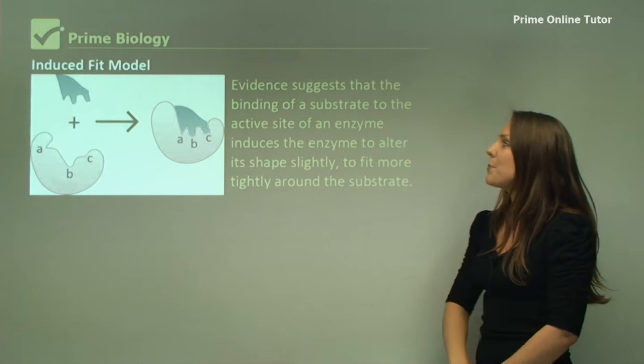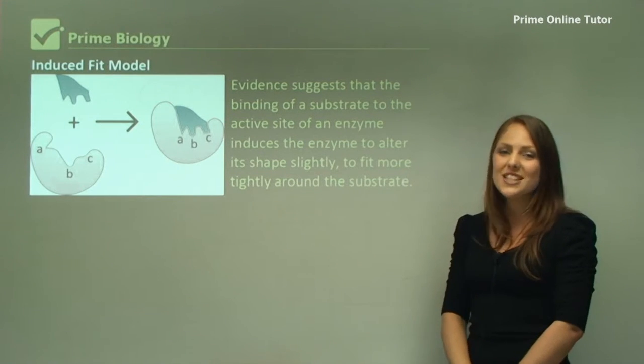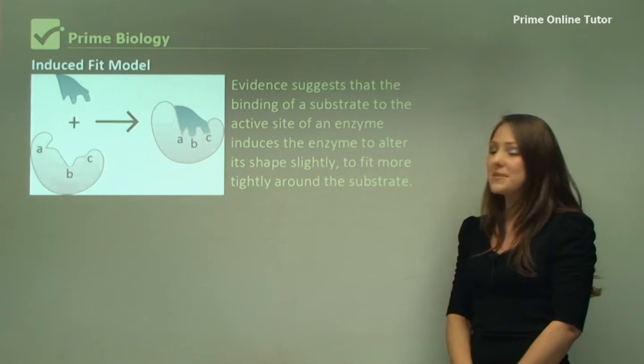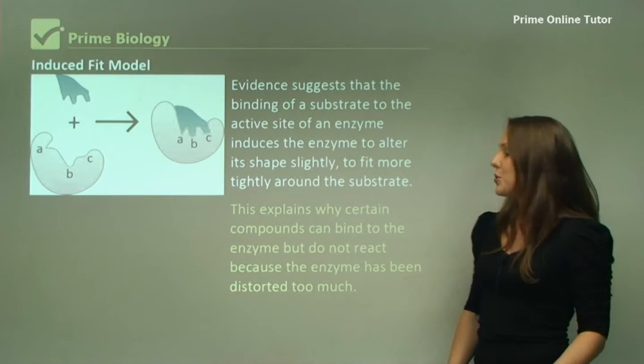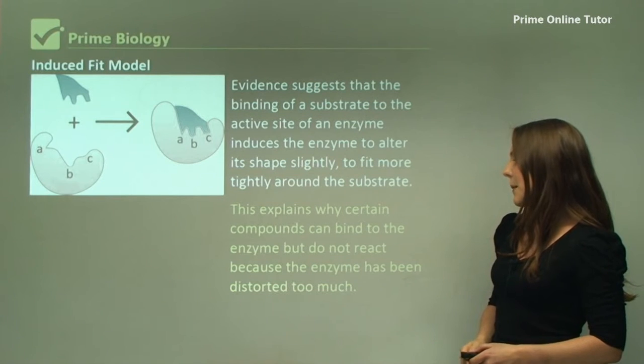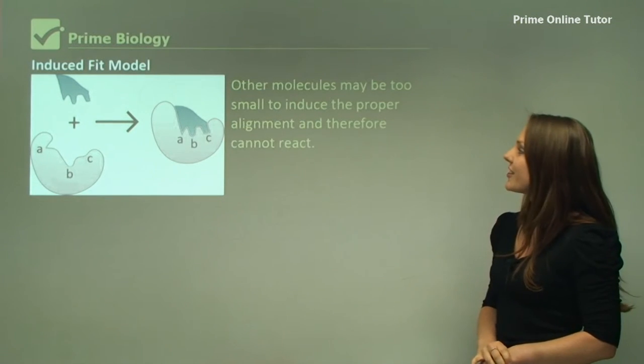Evidence suggests that the binding of a substrate to the active site of an enzyme induces the enzyme to alter its shape slightly to fit more tightly around the substrate. This explains why certain compounds can bind to the enzyme but do not react because the enzyme has been distorted too much.